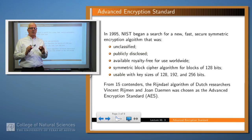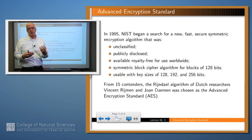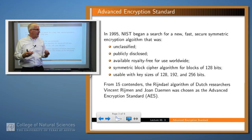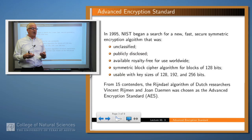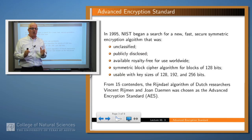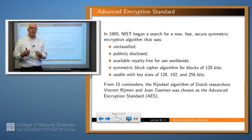AES resulted from a process that the National Institute of Standards and Technology started in 1995. There was a previous algorithm called DES, the Data Encryption Standard, which was deemed at that time to be no longer sufficiently secure. NIST asked for new algorithms to be submitted with the following properties: they had to be unclassified, publicly disclosed, and available royalty-free for use worldwide. Technically, they had to be a symmetric encryption algorithm for a block size of 128 bits, usable with key sizes of 128, 192, or 256 bits.